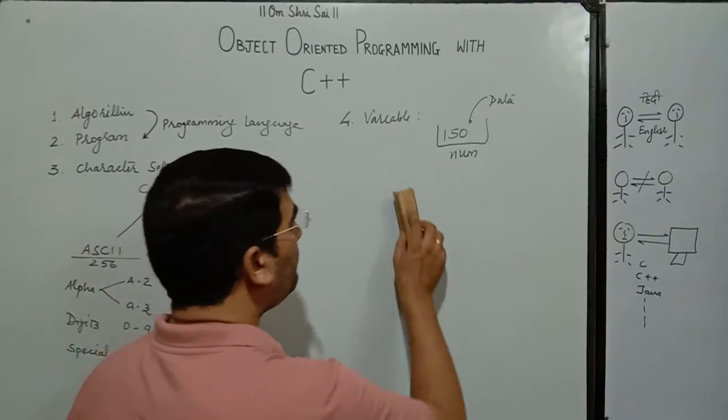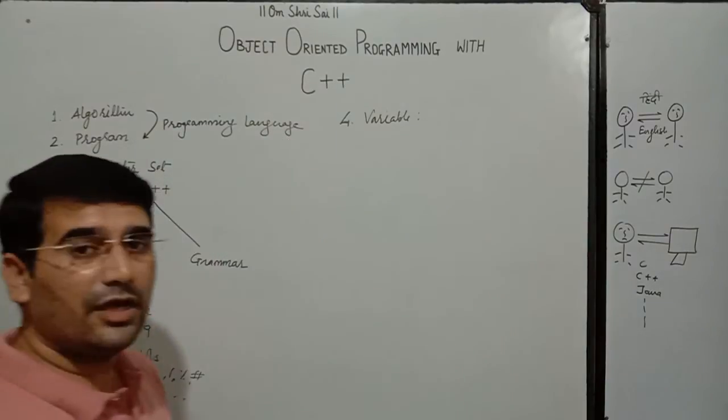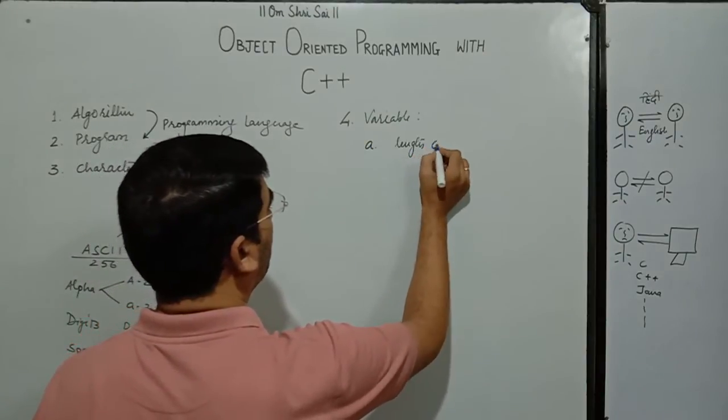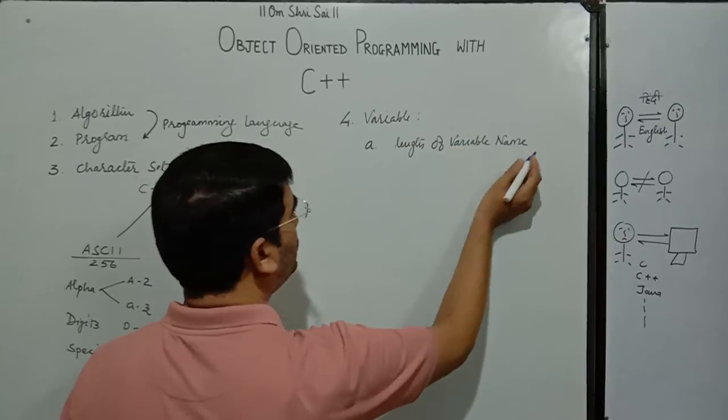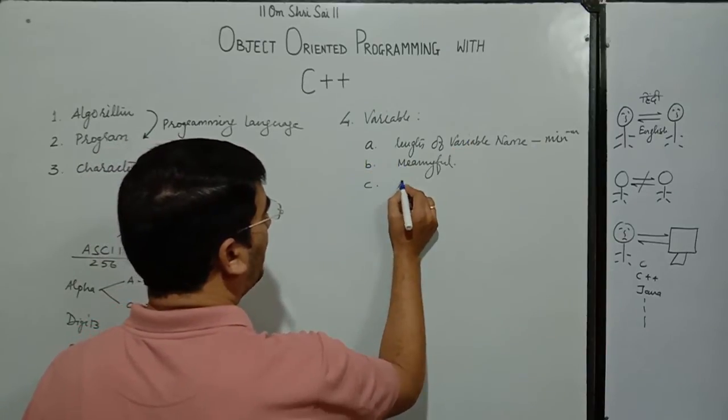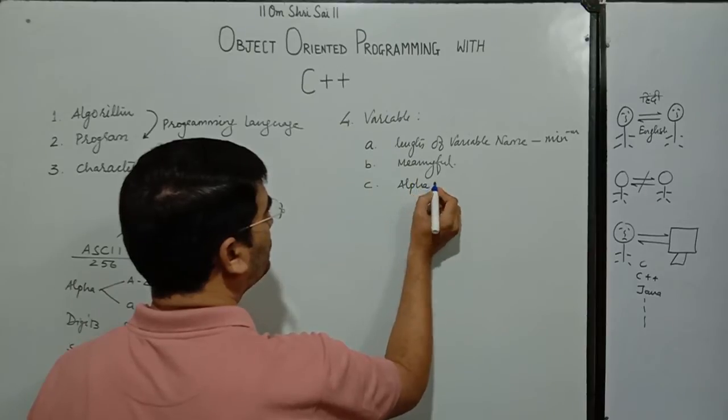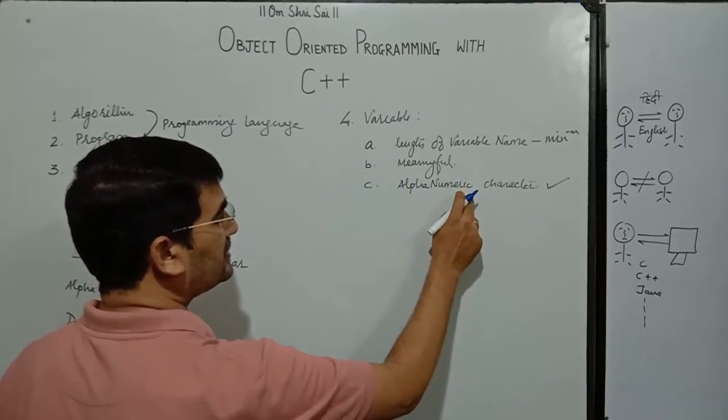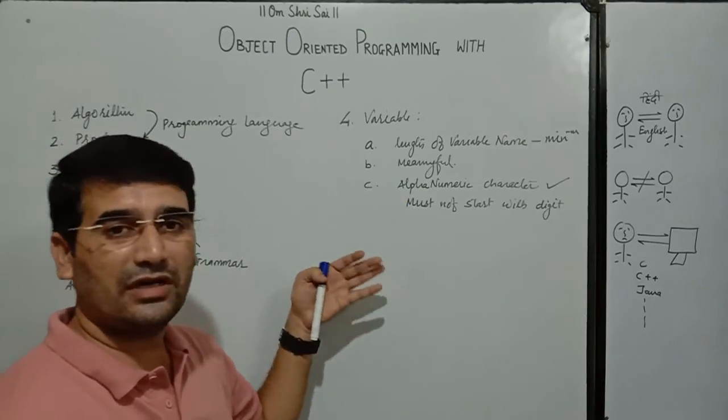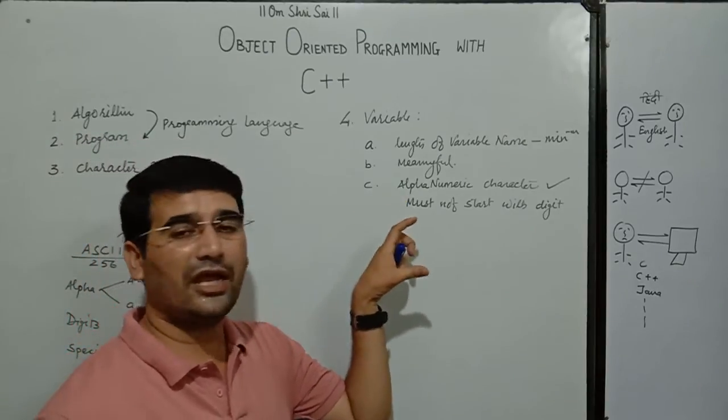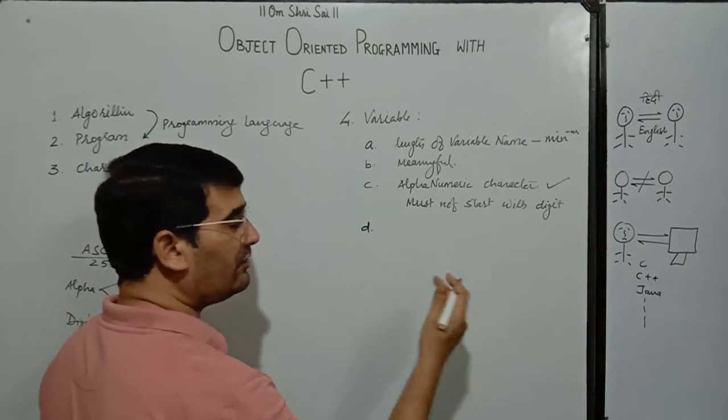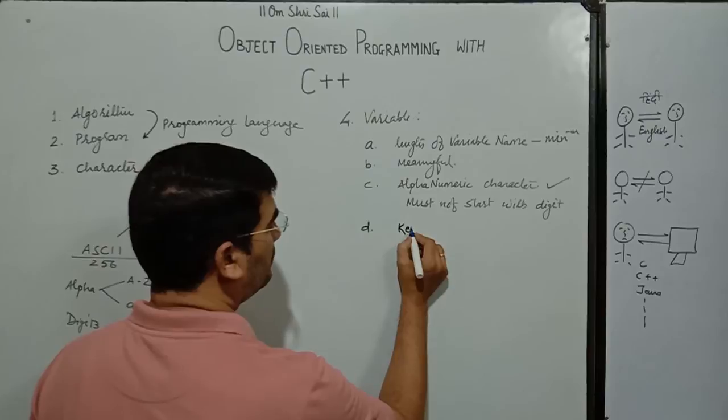Now, there are some naming conventions for the variable. Naming conventions of the variable says that length of variable name should be minimal. Now, second is it should be meaningful. Alphanumeric characters we can use but in that case it must not start with the digit. Next rule is while naming the variable, keywords are not allowed.